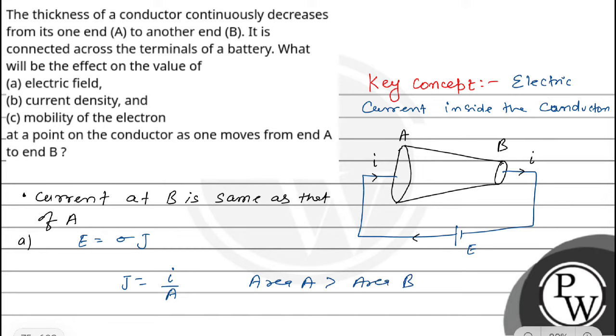Here we can see area of A is greater than area of B. So we can see J_A is less than J_B because J is inversely proportional to area. So here we can see electric field E at A is less than E at B because it is directly proportional to J. So we can conclude that the value of electric field at B is greater than at A.